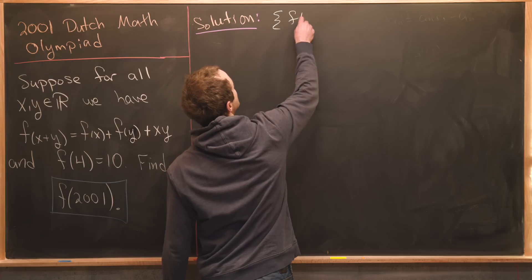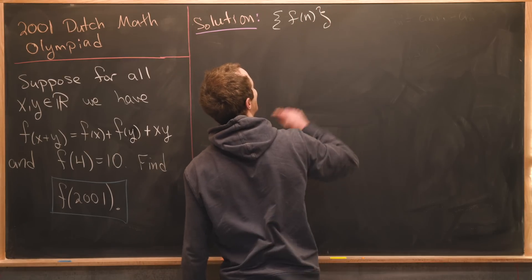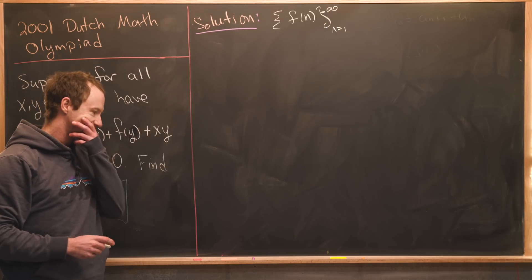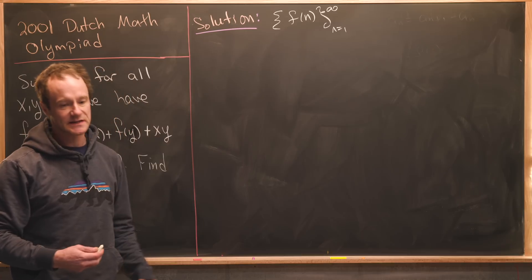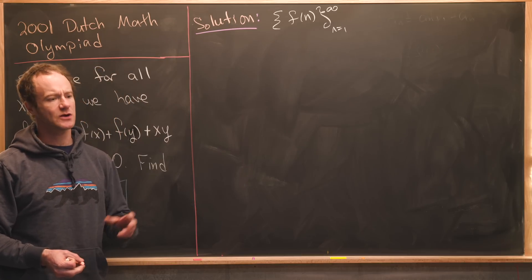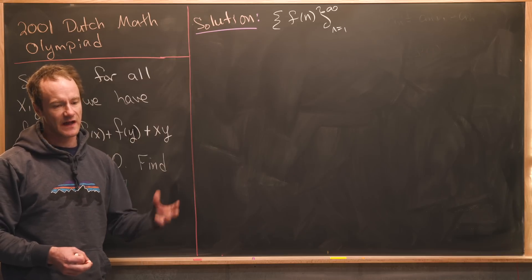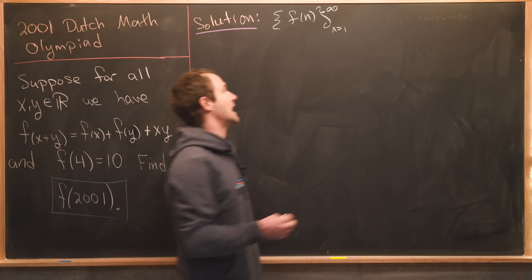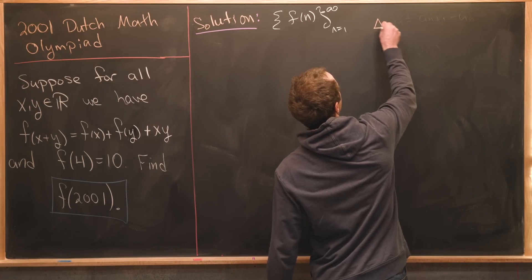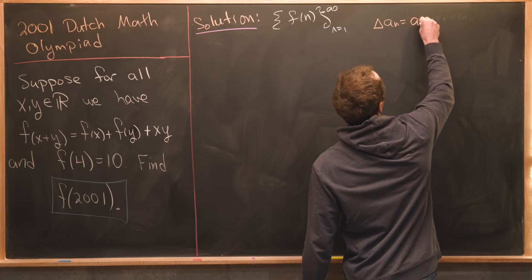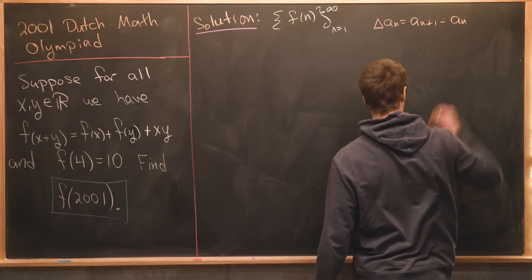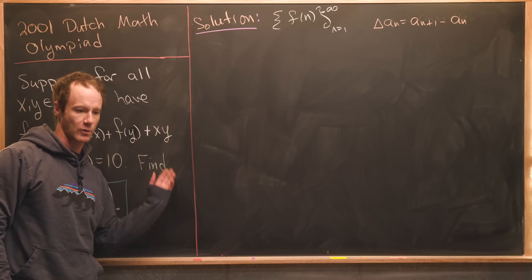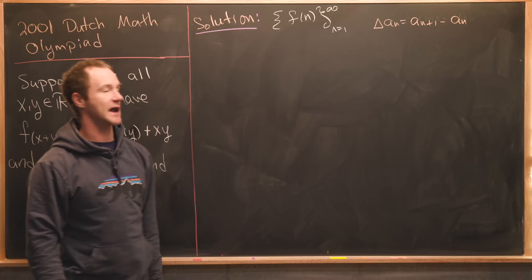We're thinking about the values of the function f of n as n goes from one to infinity. Next we want to bring into mind that we define this thing called the forward difference operator or the discrete derivative and that allowed us to calculate sums pretty easily. In that setup we had delta a sub n equaled a sub n plus one minus a sub n. That gives us some motivation that maybe we should calculate this forward difference operator defined on our new sequence.